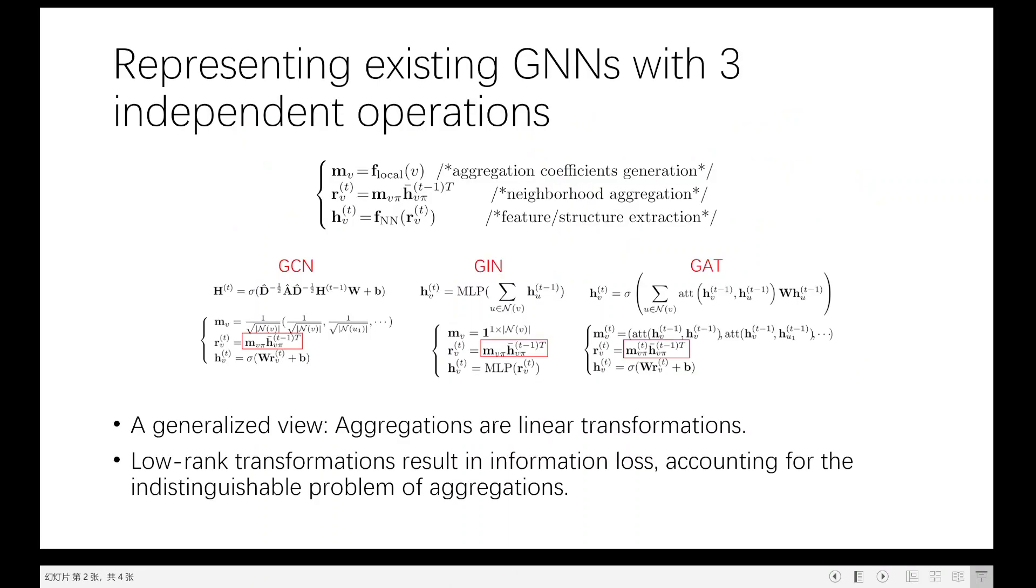We propose a new formulation that represents existing GNNs with three independent operations, including aggregation coefficients generation, neighborhood aggregation, and feature structure extraction, respectively.